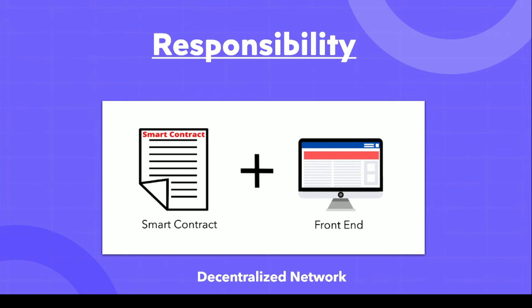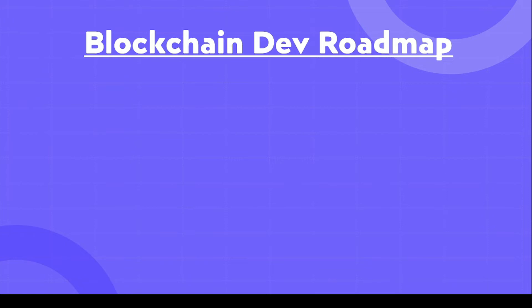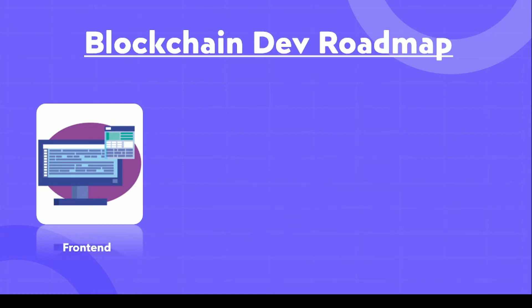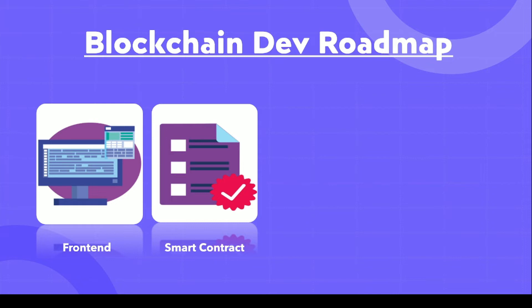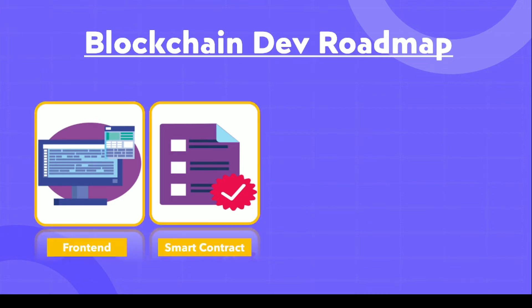Now that we understand the responsibility of a blockchain developer and what a decentralized application is, let's look at the roadmap. A decentralized application consists of two technologies: your smart contract and your front end. The first things you should learn in blockchain development are how to create a front end and how to write a smart contract. If you know these two technologies, that is more than enough to get started.